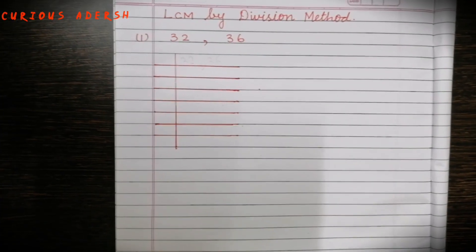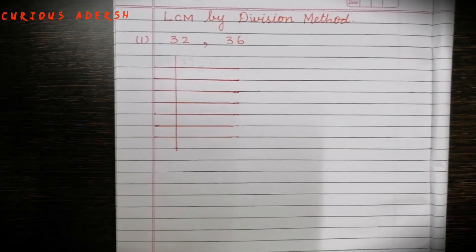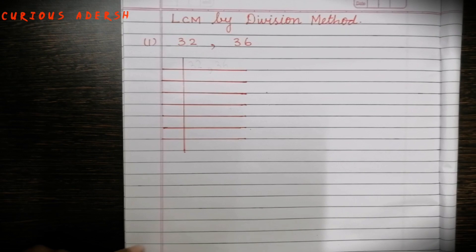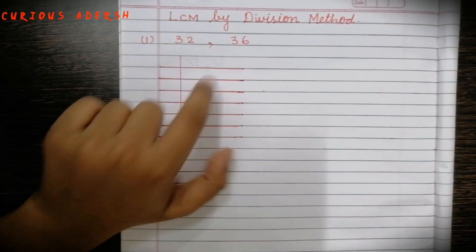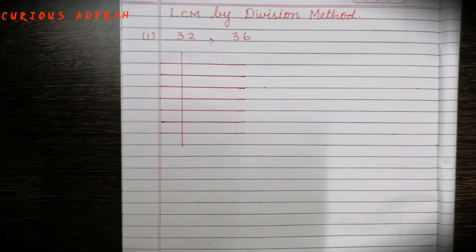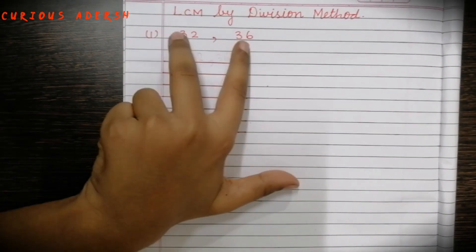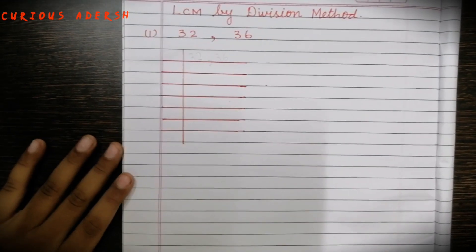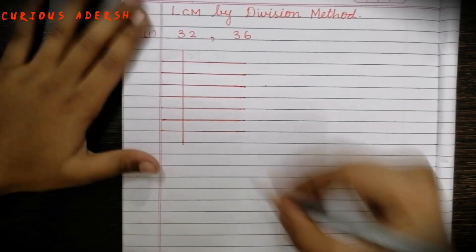Now let's find LCM by division method for 32 and 36. For that, we have to divide these two numbers by prime numbers. Let's do it.